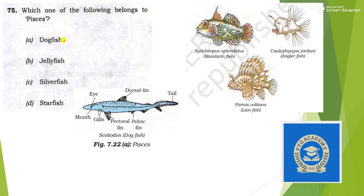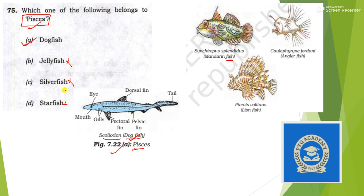Next: which one of the following belongs to Pisces? Whenever this question asks which belongs to Pisces, it means which is a true fish, because Pisces includes only true fish. From the NCERT, in the Pisces column, Scoliodon — also known as dogfish — comes under Pisces, so it is a true fish. The answer is option A. Jellyfish, silverfish, and starfish — although the names suggest they are fish — are not actual Pisces.